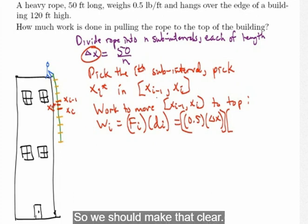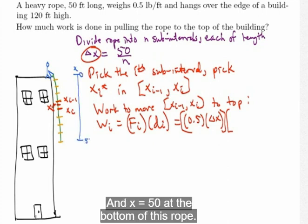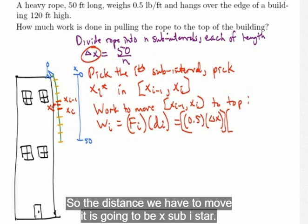So we should make that clear. Here is our x axis here. 0 on top and x equals 50 at the bottom of this rope. So the distance we have to move it is going to be x sub i star.